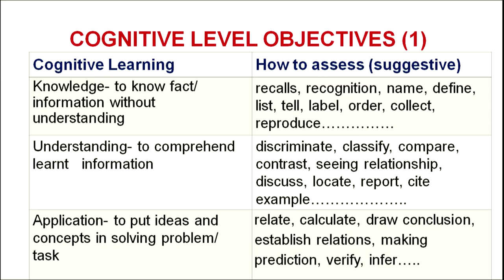The second level of cognitive objectives is understanding. Understanding means if the child is able to demonstrate — able to classify, compare (which includes both differences and similarities), see relationships between two situations or two variables. Other parameters include locating situations, identifying something, report making, and citing examples. These are the assessment parameters for cognitive understanding.